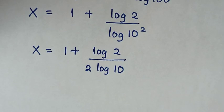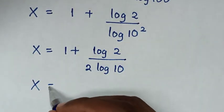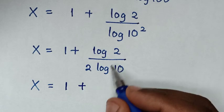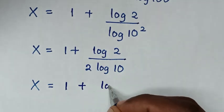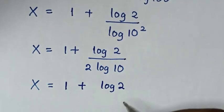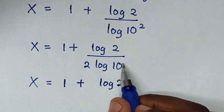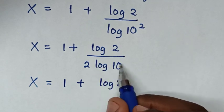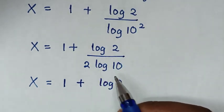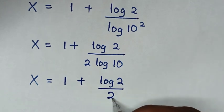Then in the next step, it will be x is equal to 1 plus log of 2, over 2 log of 10. Since log of 10 is equal to 1, it will be 2 times 1, which is 2. So the denominator is 2.